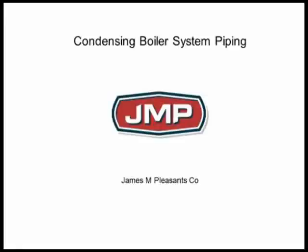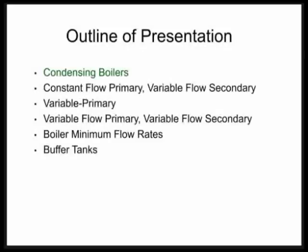Today we're going to talk about condensing boiler system piping — how to apply condensing boilers and how to pipe them up to get the most efficiency. We'll go over what condensing boilers are, what they look like, and their features. We'll discuss piping options: constant flow primary, variable flow secondary, or variable primary. We'll also cover boiler minimum flow rates, buffer tanks, whether you need one, how to determine that, and where to put it.